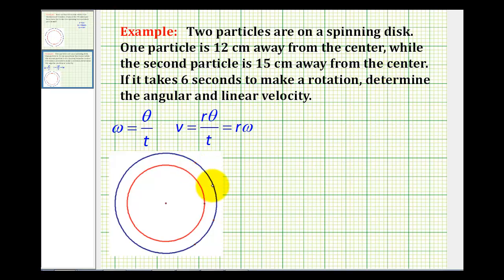So looking at these concentric circles, we could think of one particle being here, 12 centimeters away from the center. We could think of the second particle here, 15 centimeters away from the center.